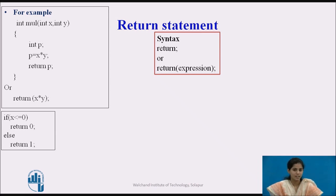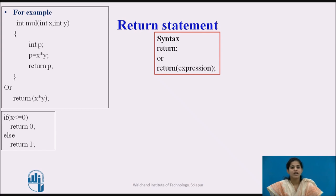The second form of the return statement is return with an expression. It is used to terminate a function and return a value to the calling function. It returns the value of the expression. When a value is returned, it is automatically cast to the function's return type. If the function type is void, then it cannot return any value to the calling function.